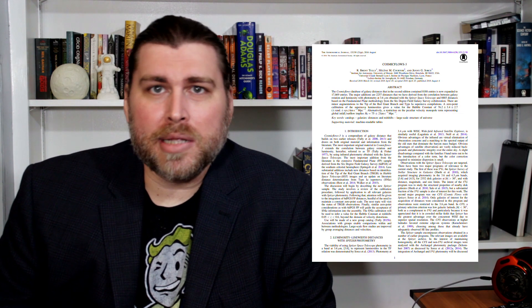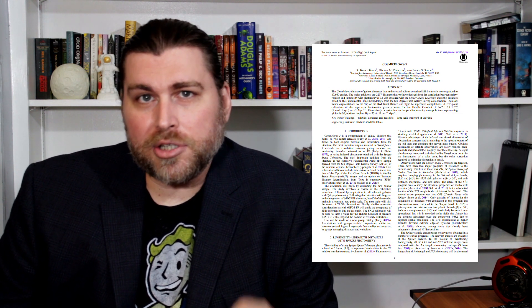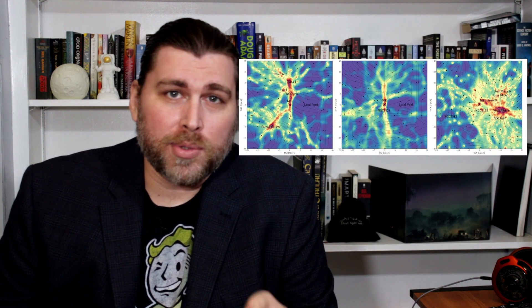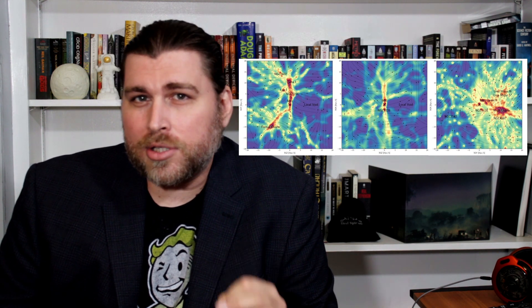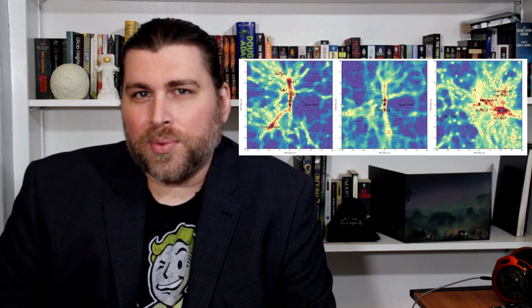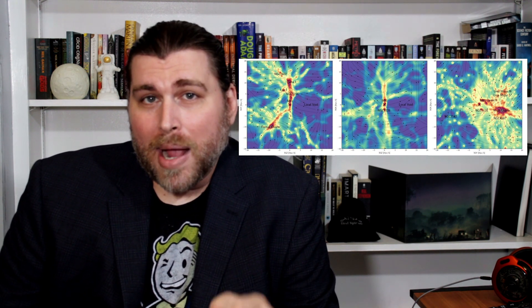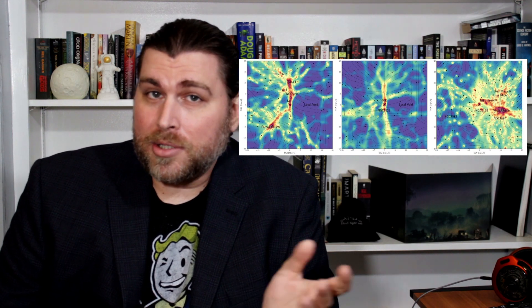Once their AI model completed its map of the dark matter distribution in the cosmic web, the researchers applied it to actual data from the local universe — the CosmicFlow-3 Galaxy catalog. This catalog contains comprehensive data about the movement, composition, and distribution of 17,000 galaxies within 200 megaparsecs, equal to 3.26 million light years. The result was a map of the cosmic web that reveals the distribution of dark matter and showed structures of dark matter connecting galaxies — dark matter bridges.